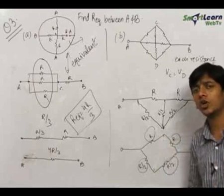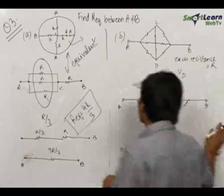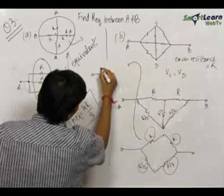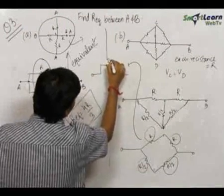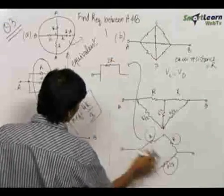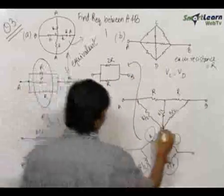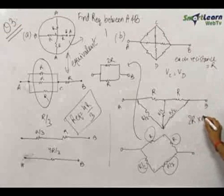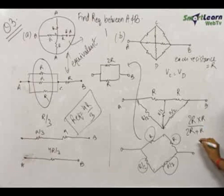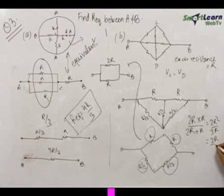Any wire through which current does not pass can be removed. Therefore our equivalent circuit becomes like this. Now these two are in series, therefore this becomes 2R over here, and this 2R is in parallel with R — that is R/2 plus R/2 equals R. Now the equivalent of 2R and R in parallel will be (2R × R)/(2R + R) = R1·R2/(R1 + R2). Therefore this becomes equal to 2R²/3R, which is equal to 2R/3.